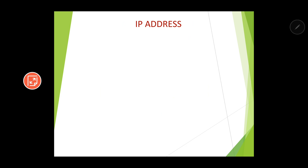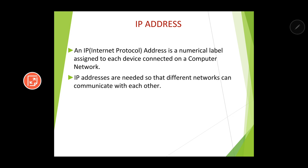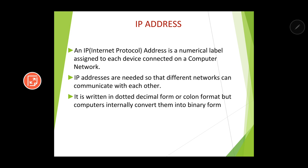The next type of network address is the IP address. In a network, different devices may be connected — computers, mobiles, printers, scanners, and others. Each device connected to a network has an address known as the IP address, or Internet Protocol address. It is a numerical label assigned to each device on a computer network, required so that different networks can communicate with each other.